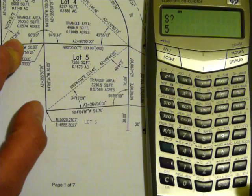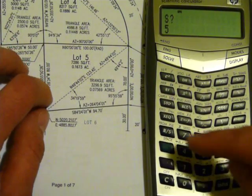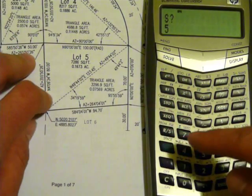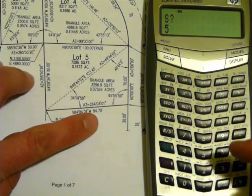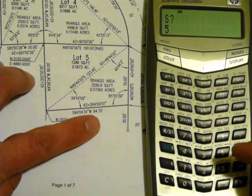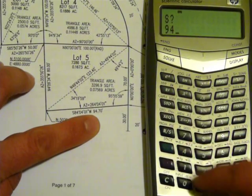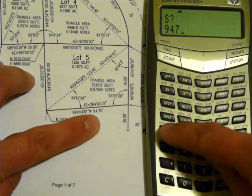It asks for the side. We always want to go in the same direction around the triangle with the values we know, so we'll go counterclockwise. So 947.0 for the side, press RS.